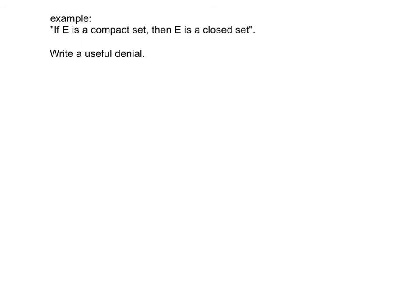Here's an example for you to practice on. Take the statement: if e is a compact set, then e is a closed set. It doesn't matter if you don't understand what compact set or closed set means. All that really matters is that it's a conditional statement of the form p implies q, where p is 'e is a compact set' and q is 'e is a closed set.' So what is a useful denial of this?